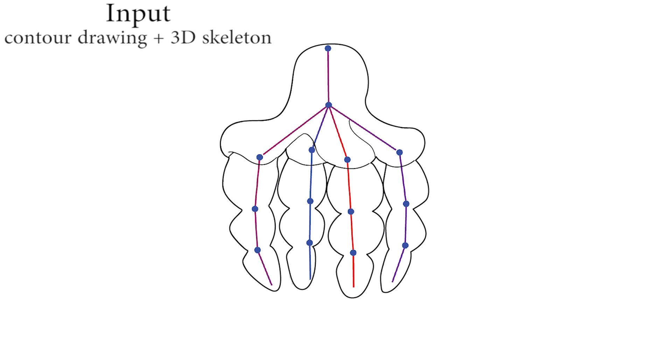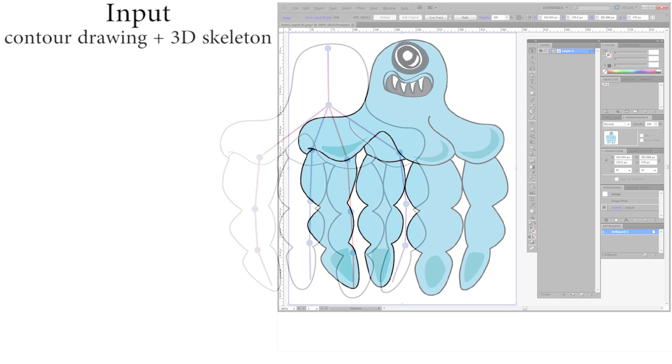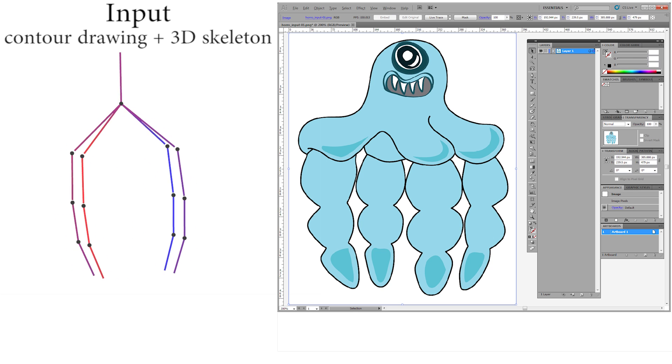Currently animators manually construct proxies using 2D cartoon drawings as a visual reference and hand-rig them to suitable skeletons for articulation.